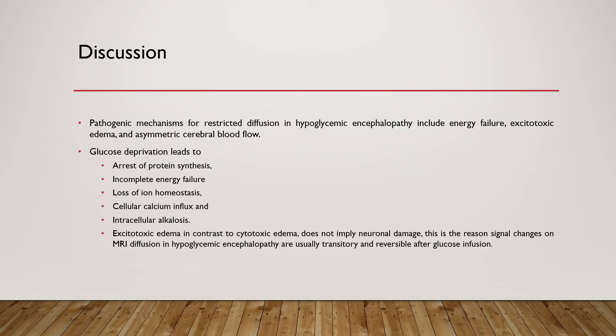Pathogenic mechanisms for restricted diffusion in hypoglycemic encephalopathy include energy failure, excitotoxic edema, and asymmetrical cerebral blood flow. Glucose deprivation leads to arrest of protein synthesis, incomplete energy failure, loss of ion homeostasis, cellular calcium influx, and intracellular alkalosis. Excitotoxic edema, in contrast to cytotoxic edema, does not imply neuronal damage — this is why signal changes on MRI diffusion in hypoglycemic encephalopathy are usually transitory and reversible after glucose infusion.